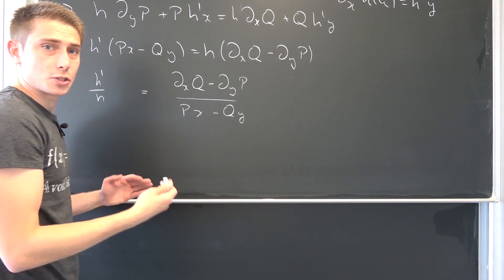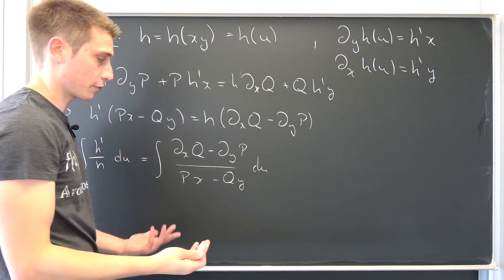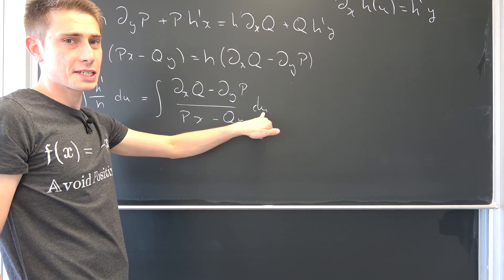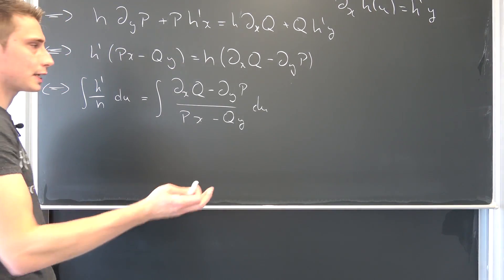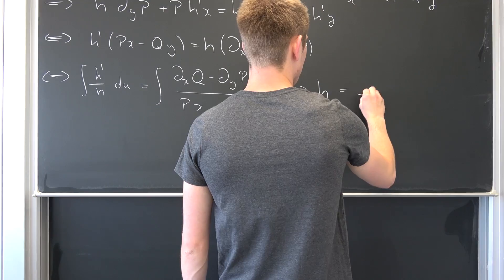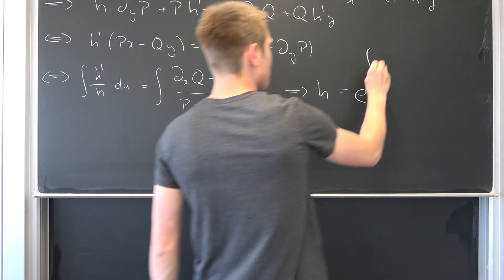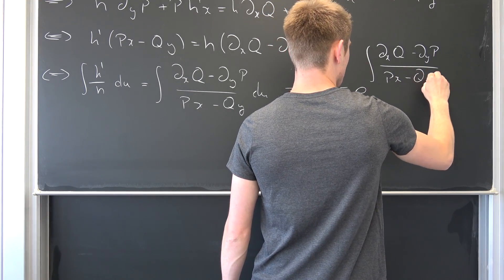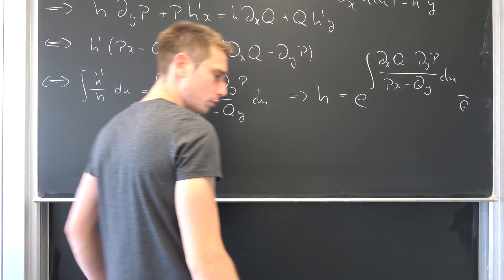This is with respect to u at the moment, so we integrate both sides with respect to u. That's why I gave it a new name — just for simplification purposes. Going through the same process of taking the natural log and exponentiating both sides, our general formula for H is: H equals e to the integral of (del_x Q minus del_y P) over (Px minus Qy) du, times e^C.